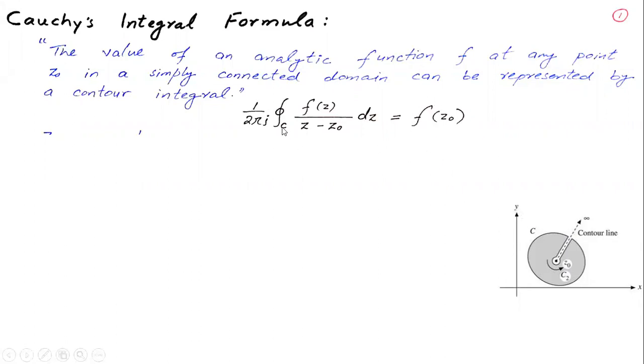The contour integral of f(z)/(z-z0) dz equals f(z0). For z on the contour, this is the black line, and z0 is a point in the contour region where you have an analytical function.